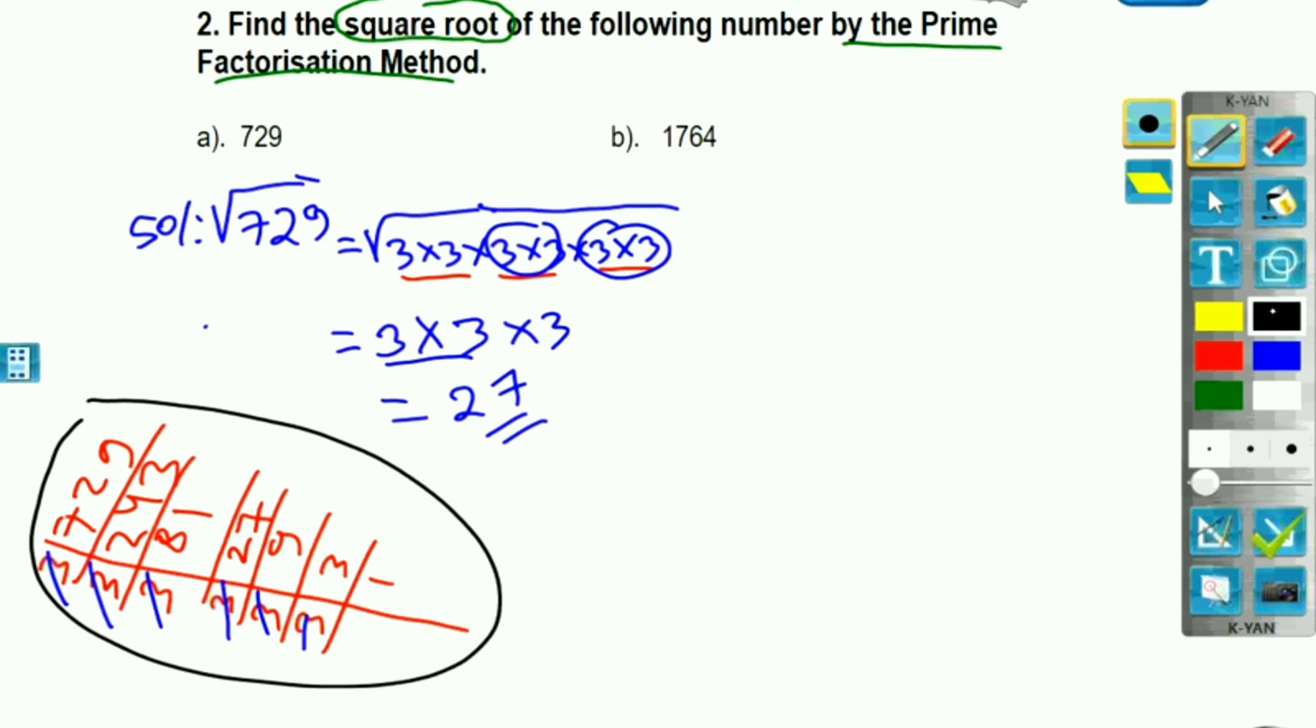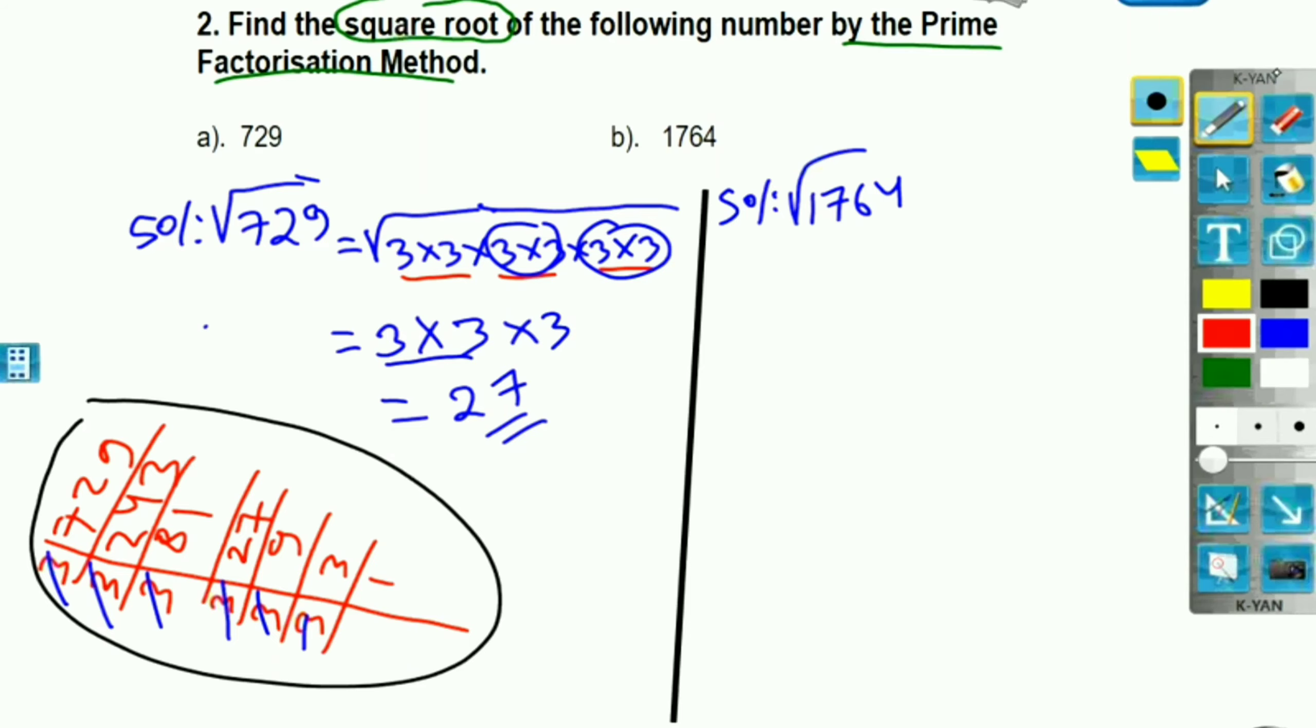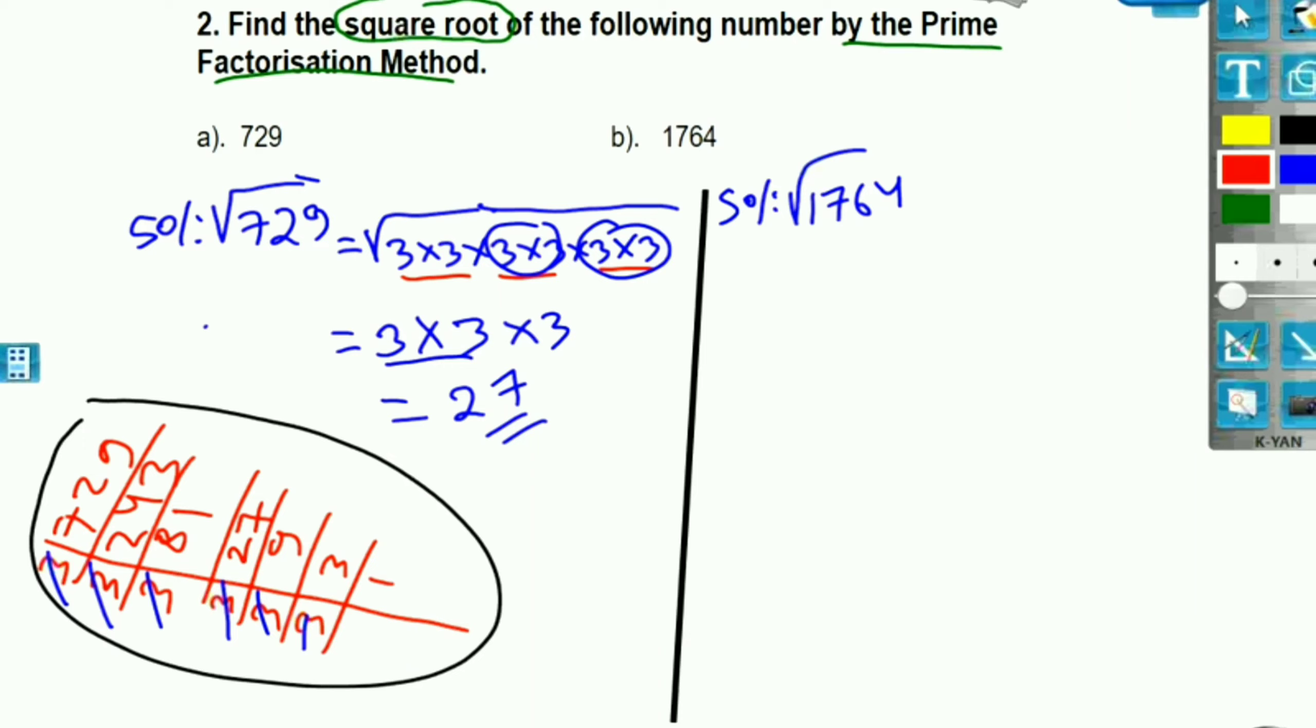Similarly, I am going to do this again. Now, I am going to do this solution. Now I am going to do this problem. 2 times 8 is 16. 2 times 8 is 16. 2 times 2 is 4.